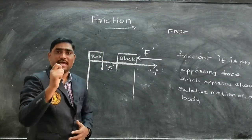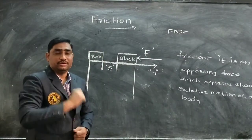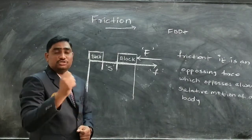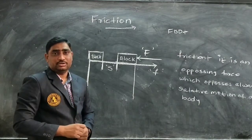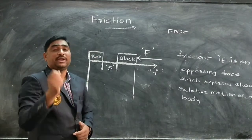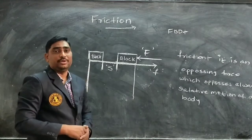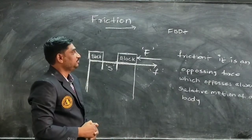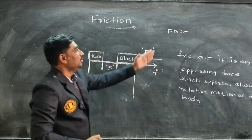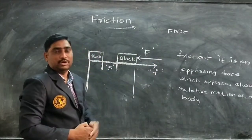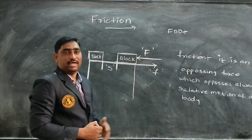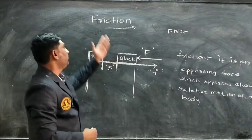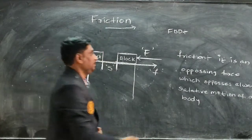A free body diagram is nothing but a figure or diagram which shows the sum of all the algebraic forces being acting on the body. So let me explain how we can describe the force of friction using a free body diagram with an example.